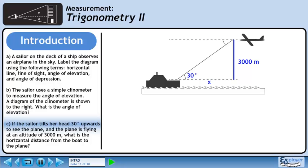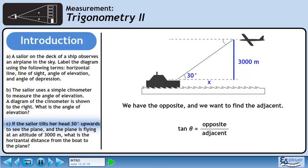We'll complete the triangle by drawing in the altitude of the plane, 3000 meters. Also, we'll label the horizontal distance from the boat to the plane x. We have the opposite and we want to find the adjacent. Use a tangent ratio.